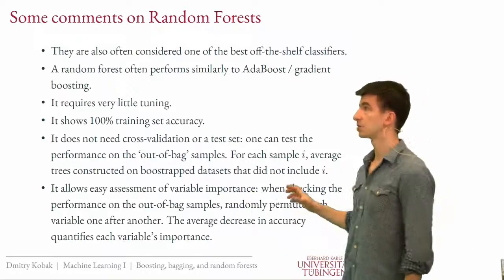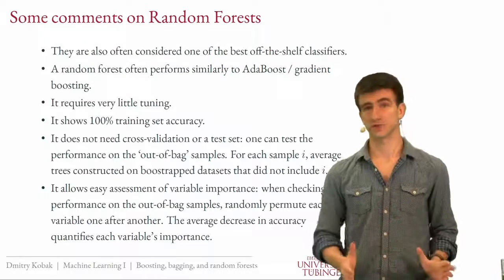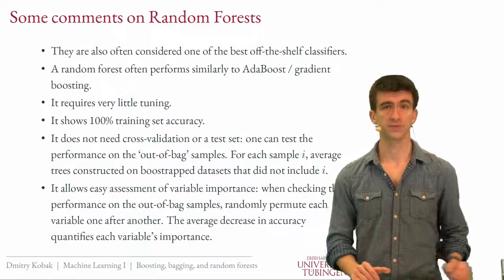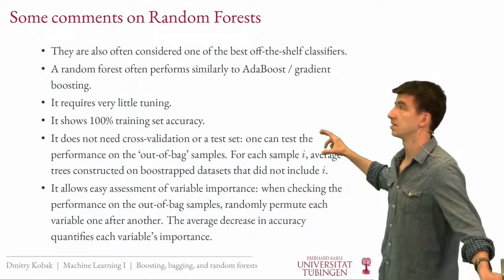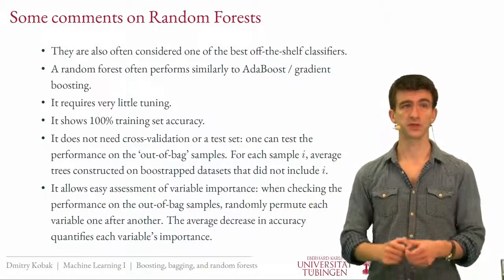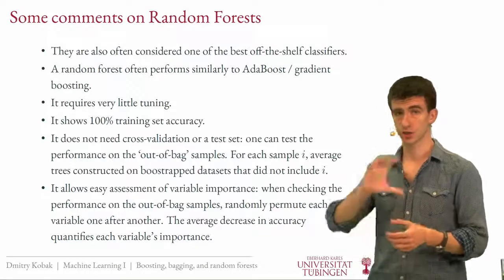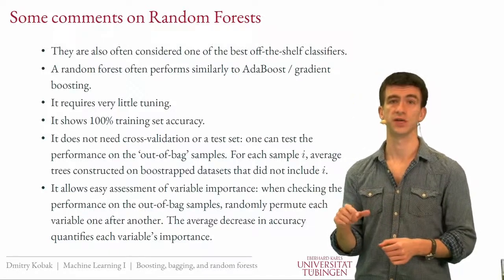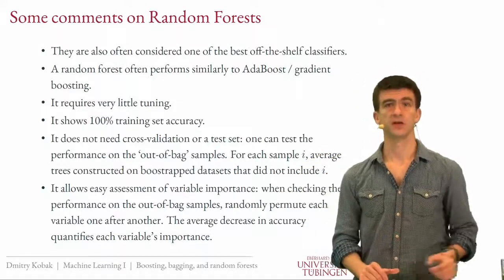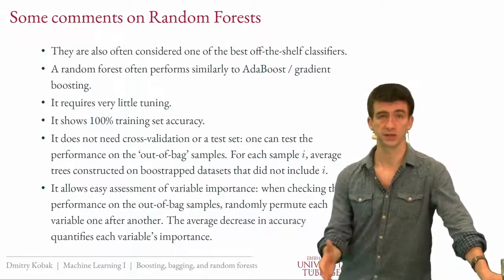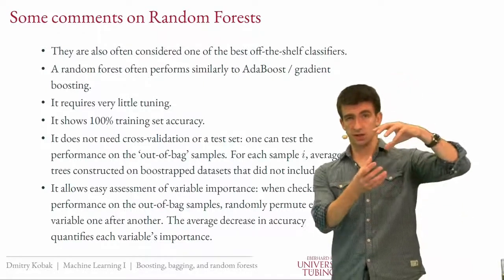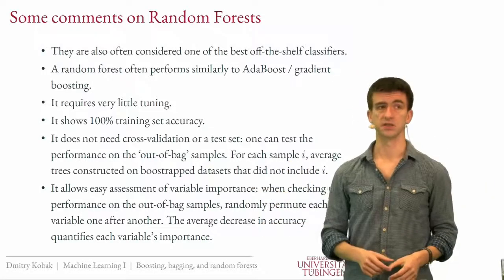Another useful feature is variable importance assessment. You have a bunch of predictors and want to know which ones contribute most to performance. Using the out-of-bag samples, you can permute one variable at a time — scramble it — and check the performance. If performance decreases a lot when a variable is scrambled, it was an important variable. This is standard in random forest literature; in scientific papers using random forest, you'll often see a plot of variables sorted by importance assessed this way.